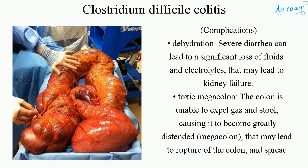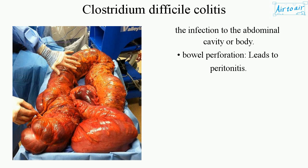Complications include dehydration — severe diarrhea can lead to significant loss of fluids and electrolytes, potentially causing kidney failure. Toxic megacolon occurs when the colon is unable to expel gas and stool, causing it to become greatly distended, which may lead to rupture of the colon and spread of infection to the abdominal cavity. Bowel perforation can lead to peritonitis.